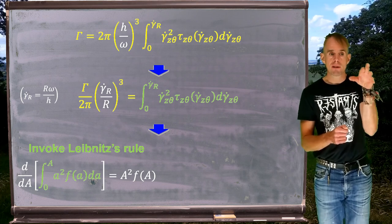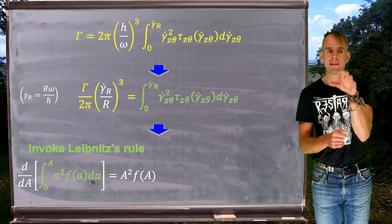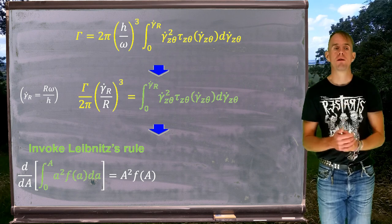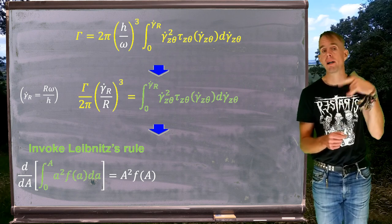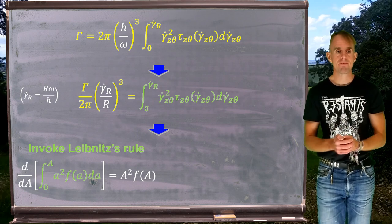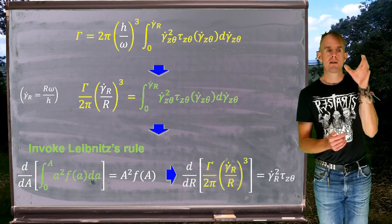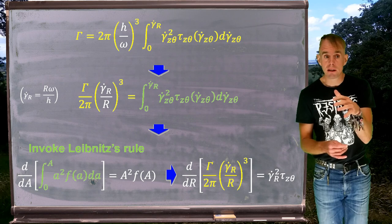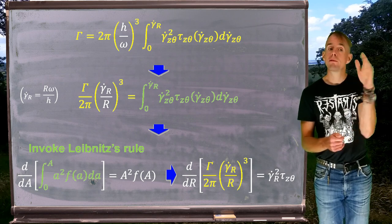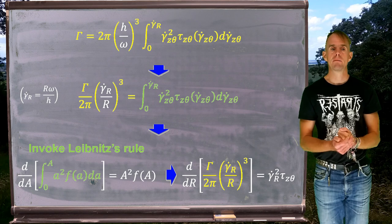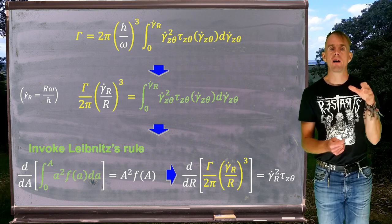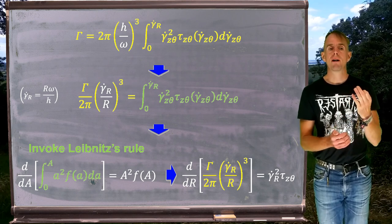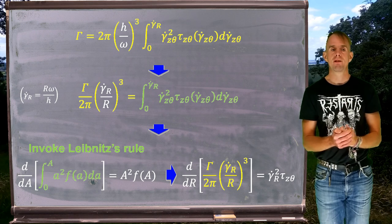The Leibniz rule states that differentiation of an integral equals a group of terms. Comparing our rearranged integral to the standard Leibniz form (with a = r and A = R), the differentiation of the integral gives a²·f(a)·da, which we substitute using our expression. So d/dR of the grouping [Γ/(2π) · γ̇_R/R³] equals γ̇_R² · τ_zθ.